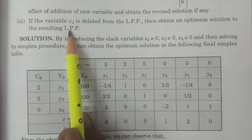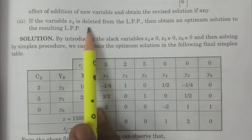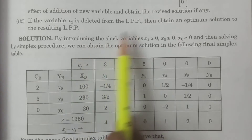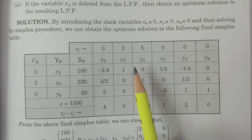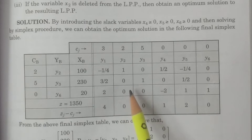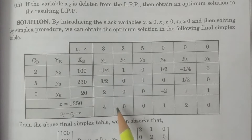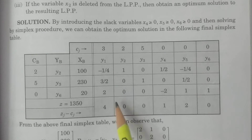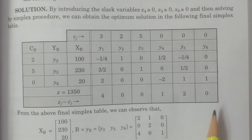In this question, the variable x2 — one of the variables in the given linear programming problem, an existing variable — is going to be deleted from the LPP. Then how to obtain the optimum solution? First of all, you have to calculate the optimum solution of the given LPP and write down the final optimum simplex table by using the simplex method. This is what the final optimum simplex table.